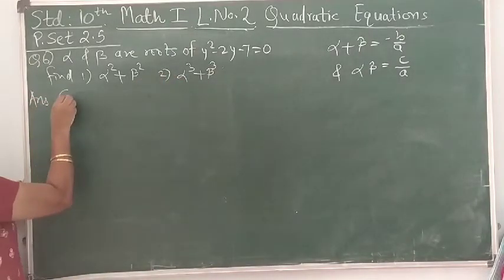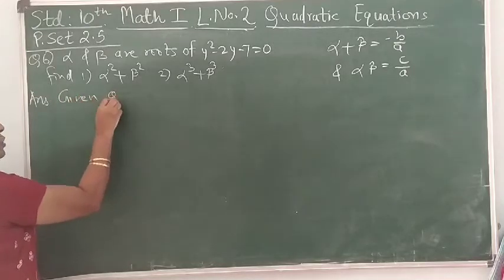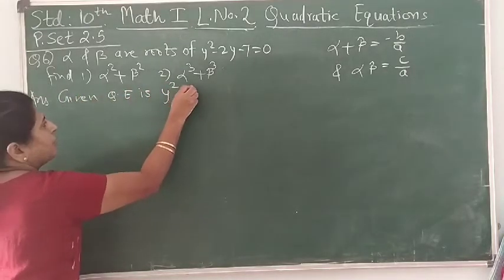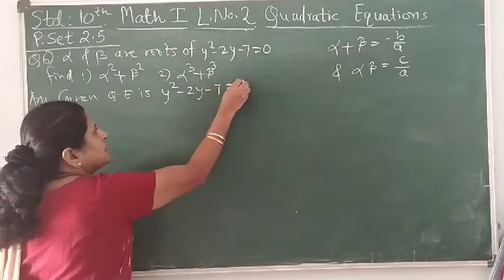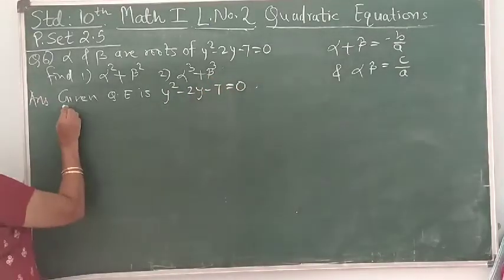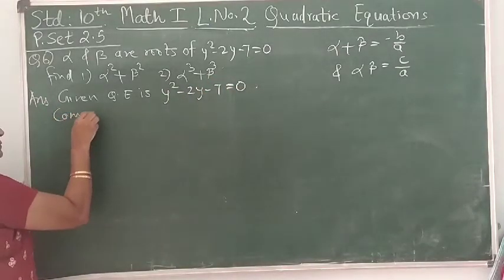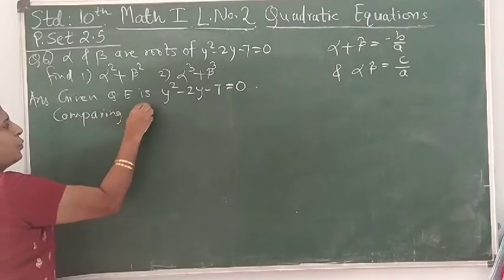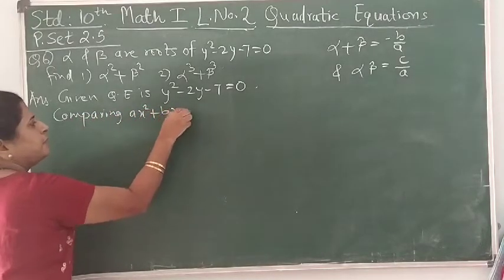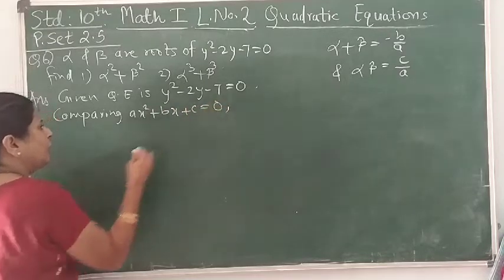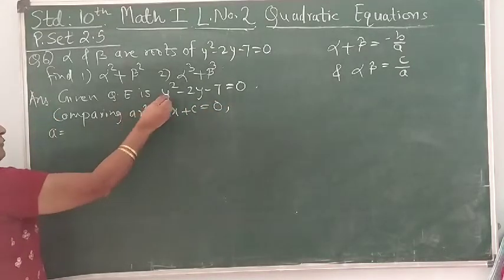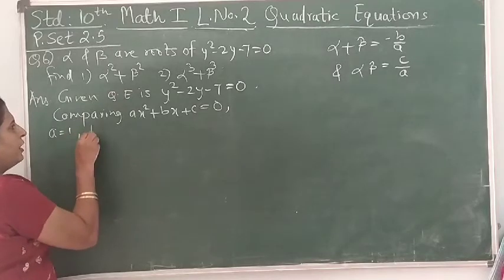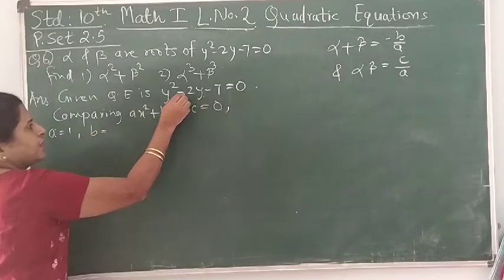We will start our answer with the given quadratic equation: y² - 2y - 7 = 0. Comparing with x² + bx + c = 0, the value of a is the coefficient of y², which is 1. The value of b is the coefficient of y, which is -2.